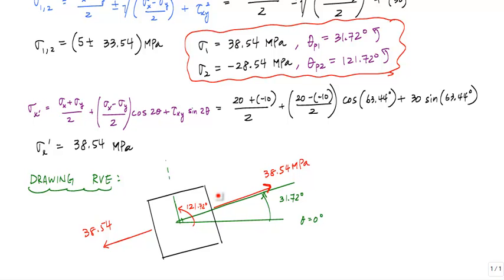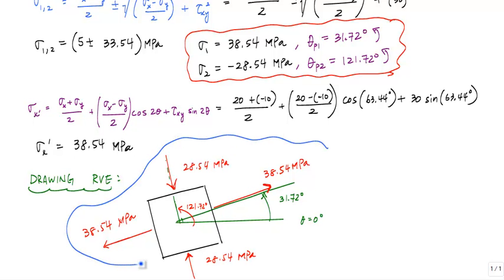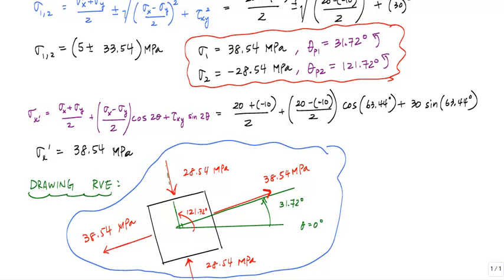And that's 28.54 or negative 28.54 megapascals, which indicates compression on this face. And I draw the direction of the arrow and the magnitude of 28.54 megapascals. And this is my principal stress state. So if we go back and look.